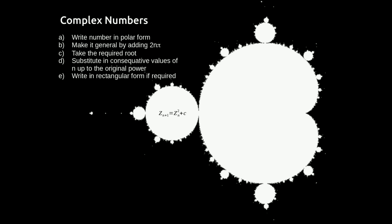Whether these situations are purely real, purely imaginary or complex, the process is the same. We first write the number in polar form. We then make it general by adding on 2nπ. We then take the required root. We then substitute in consecutive values of n up to the original power, so if it was a cubic we would do 0, 1, and 2. We then if required write the answer in rectangular form.